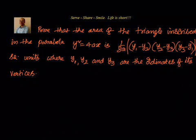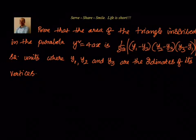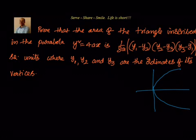We know that y squared equal to 4ax is the parabola which is opening to the right, because it's y squared equal to 4ax. There are three points somewhere on the parabola. One point is here, another point is here.